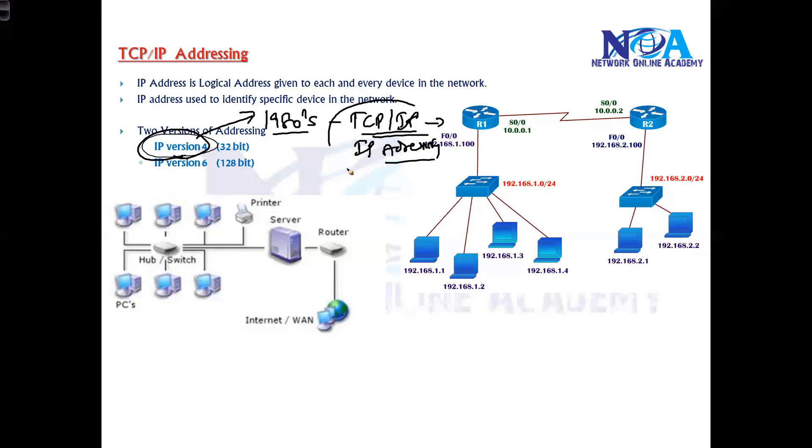This IP address is a 32-bit address, which means it supports 2 to the power of 32 addresses, around 4.3 billion IP addresses. That's the value we get in IP version 4.